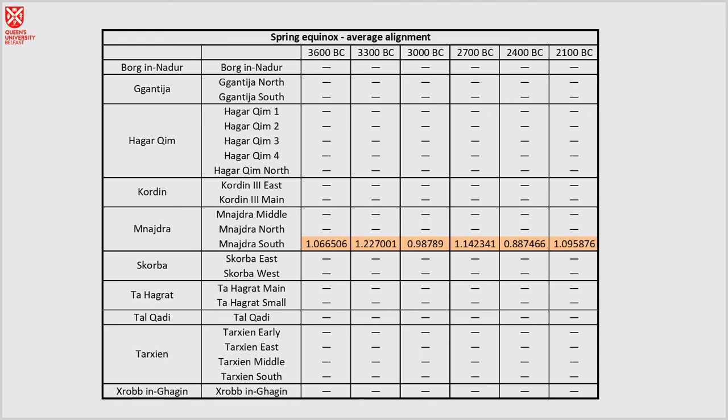Now, spring equinox, Menagerie South, which is the temple we saw earlier, has a very strong alignment with it. It seems very consistent, but none of the other temples do, which means that either they decided to do it for this one temple, or it's completely coincidental.